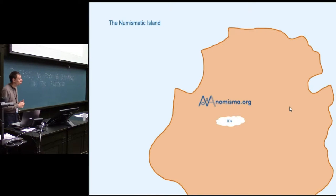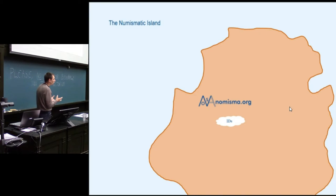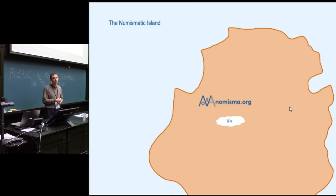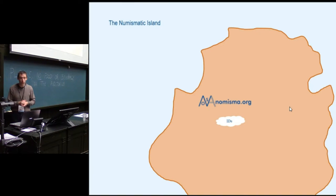What I would like to show you is nomisma.org. I think most of you might know it — it's a group of numismatists, since already several years, who together define the concepts that are needed for numismatics. What they do is take the concepts, such as what is the authority who's allowed to generate a coin, and they generate these concepts in linked open data format. So they generate URIs, and everybody can link to this URI and say, okay, I want to have this authority. That's the goal of nomisma.org.